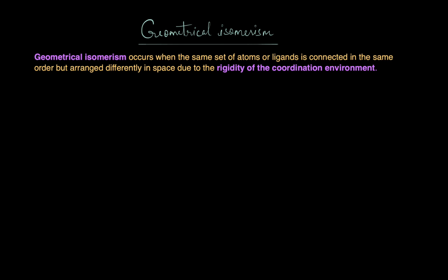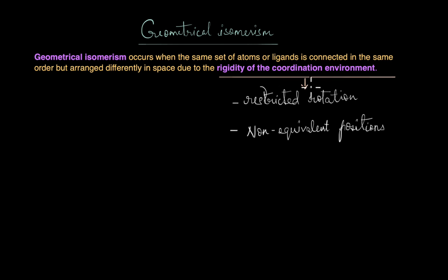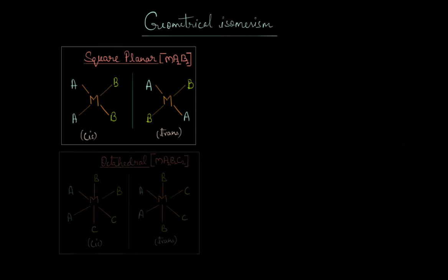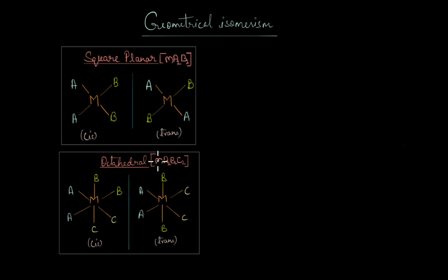Rigidity means that for geometrical isomerism to occur, there must be restricted rotation and ligands should occupy non-equivalent positions. Non-equivalent positions means that each position around the central metal ion is unique and the different arrangements — cis and trans — are fixed. You cannot convert one form to another by simply rotating the compound or by overlapping it. These positions are fixed with respect to each other, which is what allows for unique cis and trans isomers.